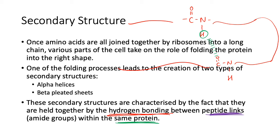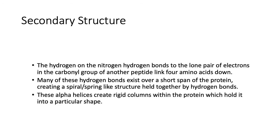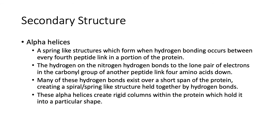So it's between the peptide links of the same protein. For alpha helices, the hydrogen and nitrogen bonds with the lone pair — it's a spring-like structure which forms when hydrogen bonding occurs between every fourth peptide link in a portion of the protein. The hydrogen on the nitrogen hydrogen bonds to the lone pair of electrons of the carbonyl group of another peptide link four amino acids down.